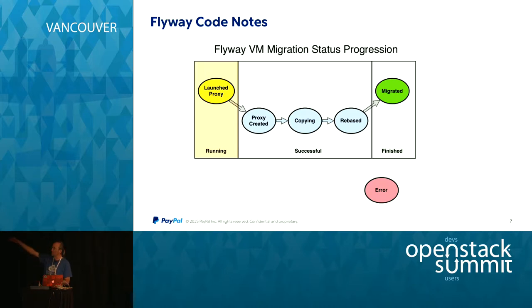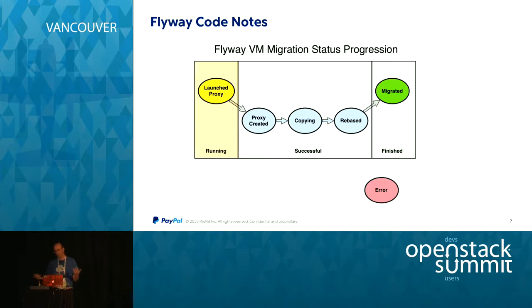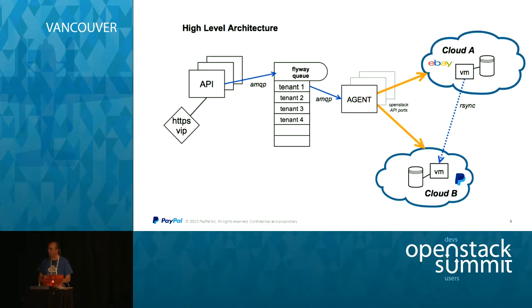We only copy the base image, which is very small — maybe a gigabyte of Ubuntu — and then the files written to the VM in the overlay data file, which is much smaller than the overall image. In Glance, all you have is the base image, not all of the flattened images. This shows the progression as it goes through the queue. At any point something might go wrong, it falls into an error state, and we have a database that collects the status.